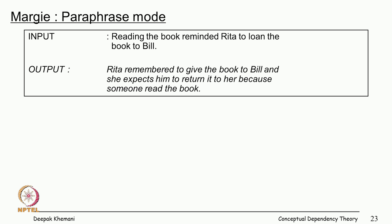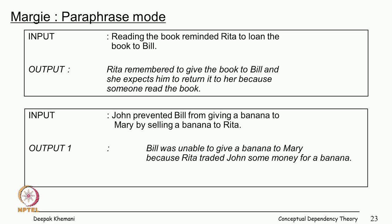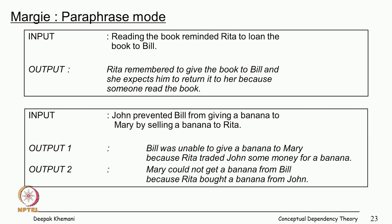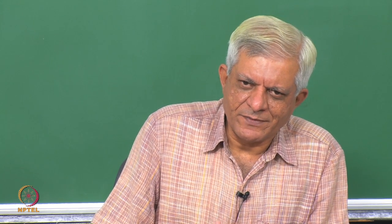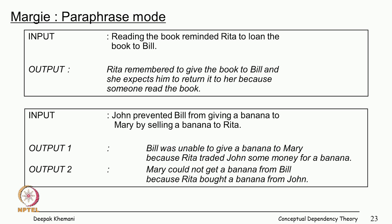'Reading the book reminded Rita to loan the book to Bill.' So Rita remembered to give the book to Bill and she expected him to return it, because of the word 'loan,' because someone read the book — in this case it is not figured out that it was Rita herself who read the book. These small inferences can sometimes be hard to make in natural language. 'John prevented Bill from giving a banana to Mary by selling a banana to Rita.' So Bill was unable to give a banana to Mary because Rita traded John some money for the banana. Mary could not get a banana from Bill because Rita bought a banana from John.